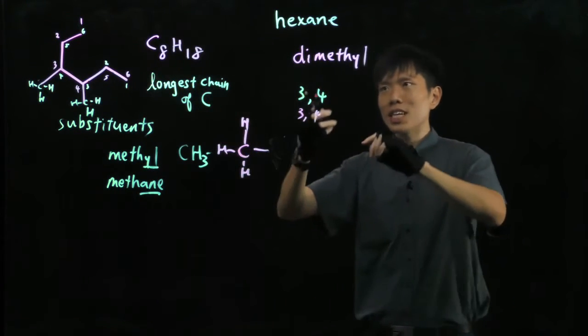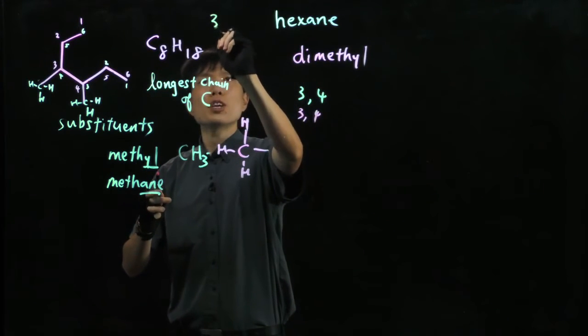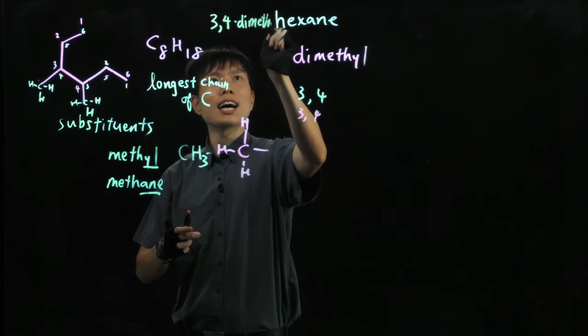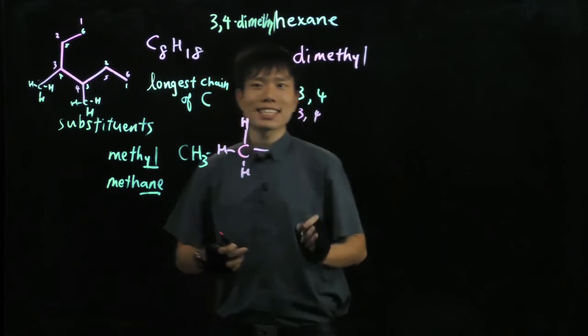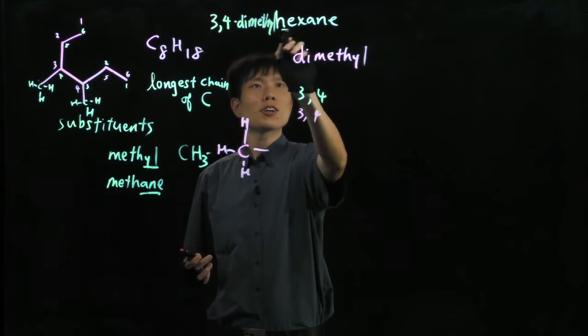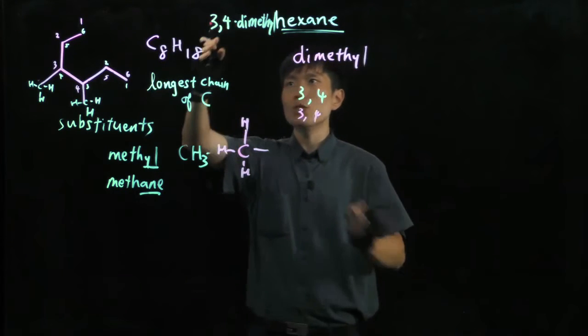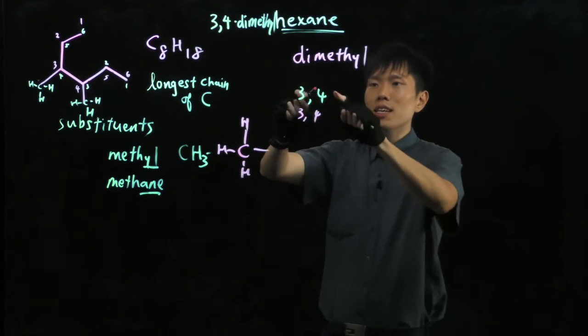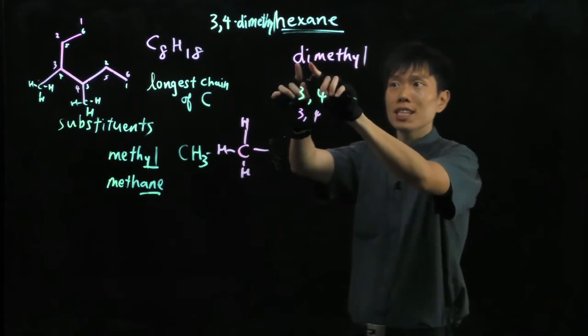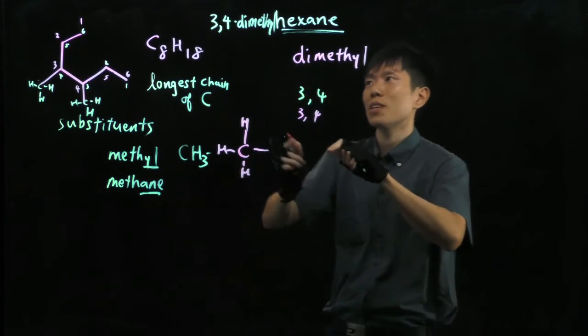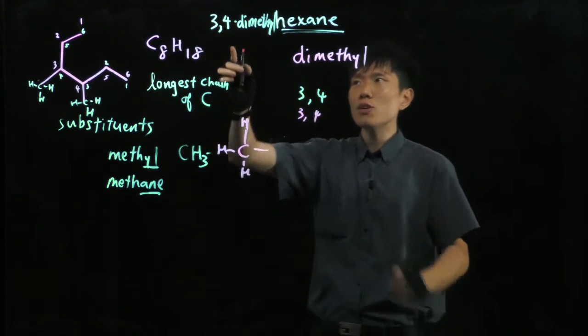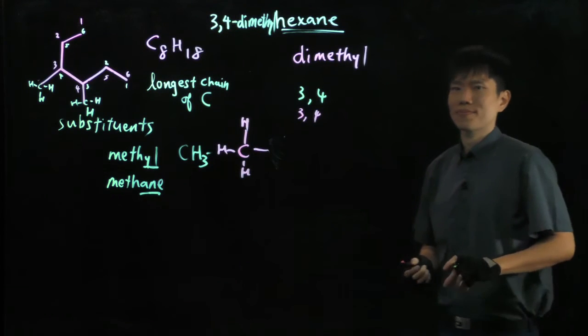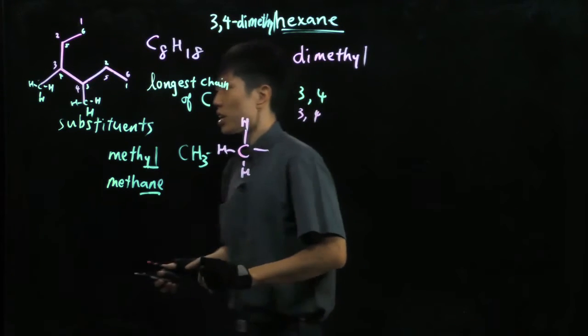So for the name for that molecule, it will be called 3,4-dimethylhexane. We insert it before the parent name, the substituents, including the location. We have to put down the numbers 3, 4, because this is indicative of the respective locations of these two methyl groups. We separate the numbers using comma, and we separate numbers from letters using a hyphen.